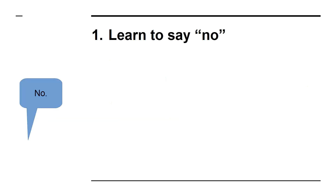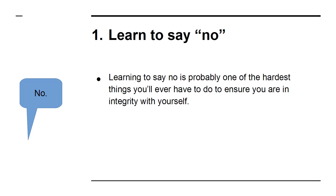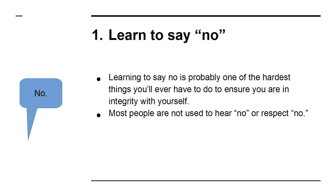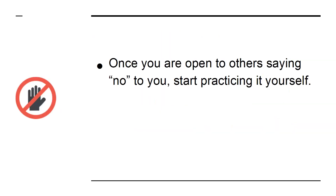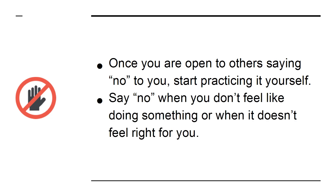1. Learn to say no. Learning to say no is probably one of the hardest things you'll ever have to do to ensure you are in integrity with yourself. Most people are not used to hearing no or respecting the word no. To learn to say no, you have to explore how you react to people who say no to you. Once you are open to others saying no to you, start practicing it yourself. Say no when you don't feel like doing something or when it doesn't feel right for you.